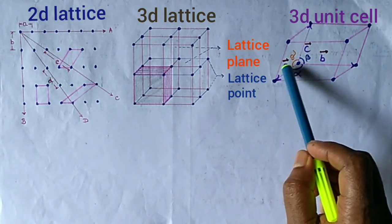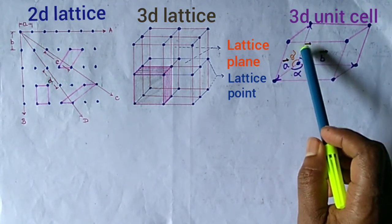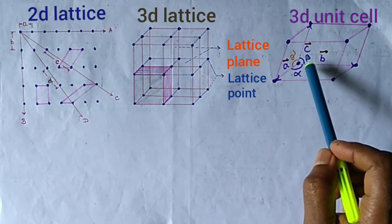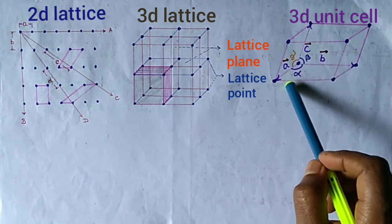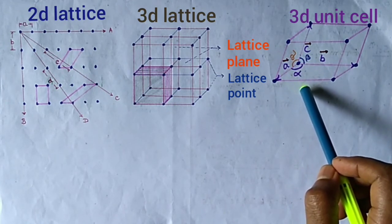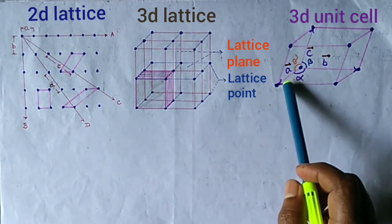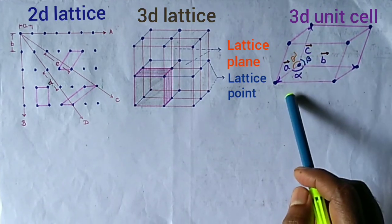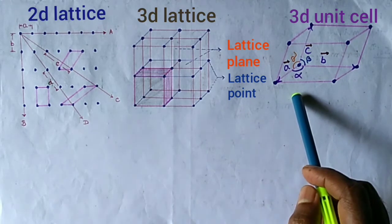The lattice vectors Vector A, Vector B, and Vector C may or may not be equal. Also, the angles alpha, beta, and gamma may or may not be right angles. Depending upon A, B, and C, and alpha, beta, and gamma, there are 7 different crystal systems.